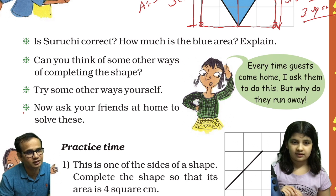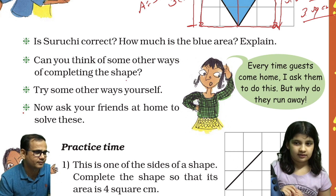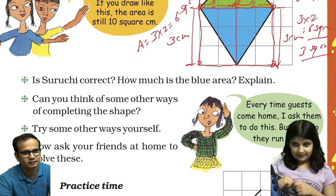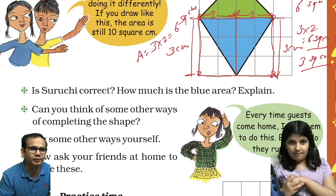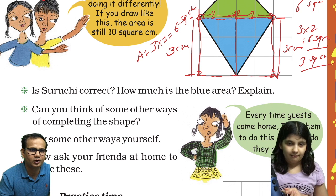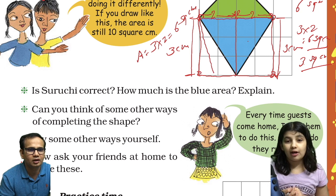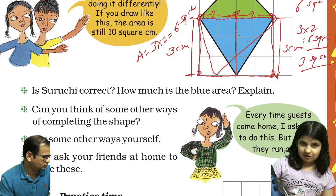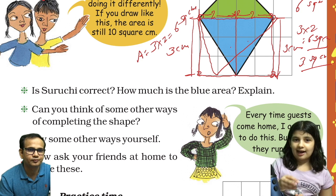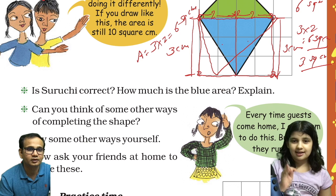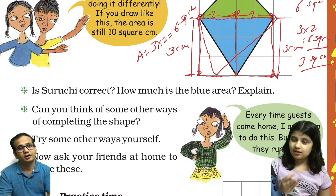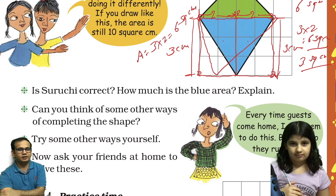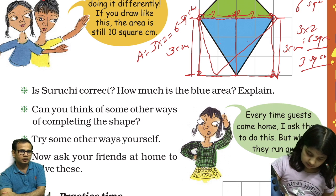Can you think of some other ways of completing the shape? Yes, we can think of many ways. We can draw like this whole rectangle, or we can draw like this, or like this. Because as you see the rectangle is also square centimeters. But Avisha, we have to complete it in the way the question asks.